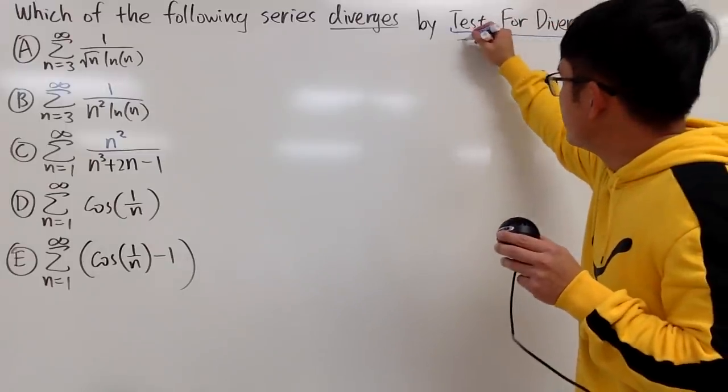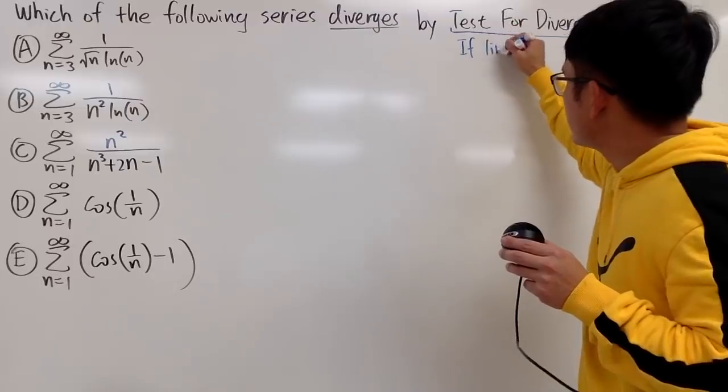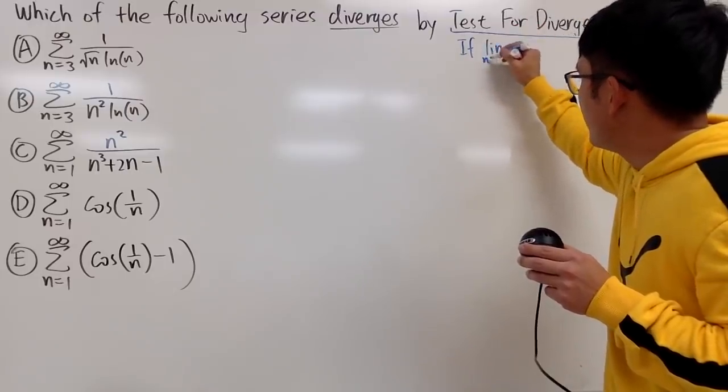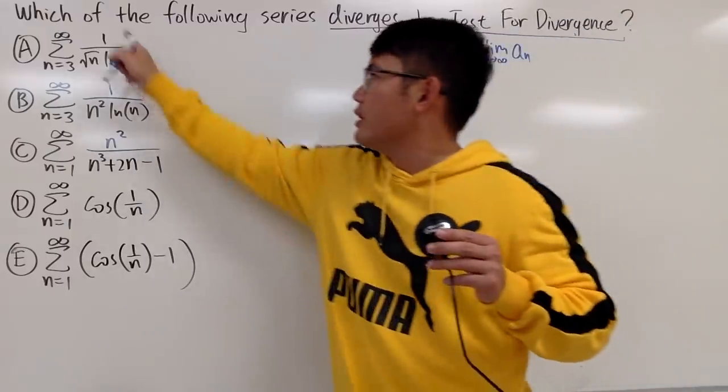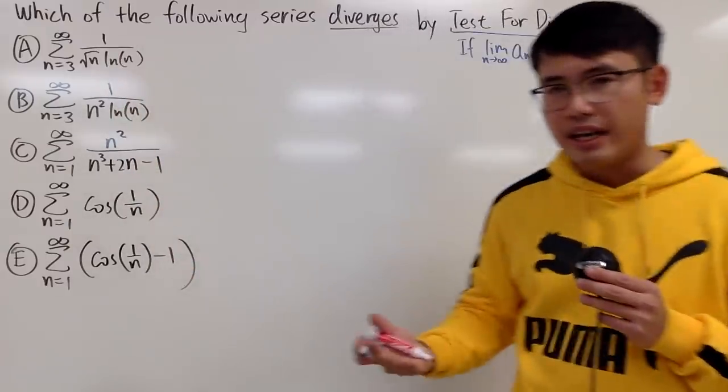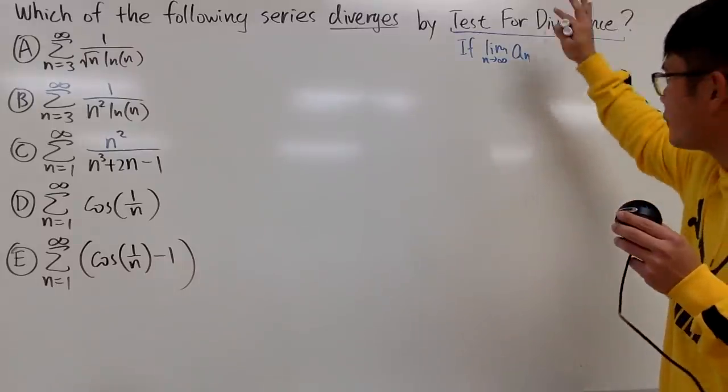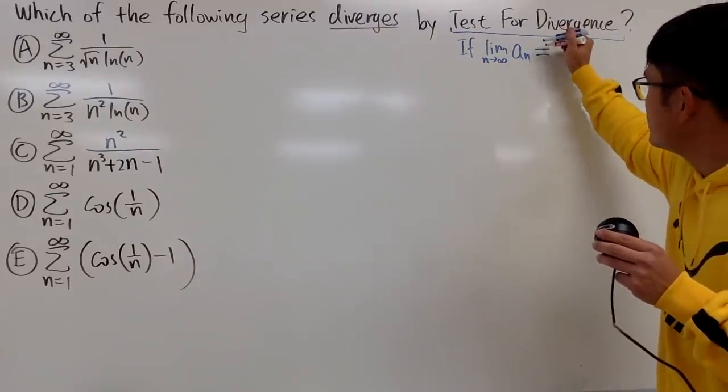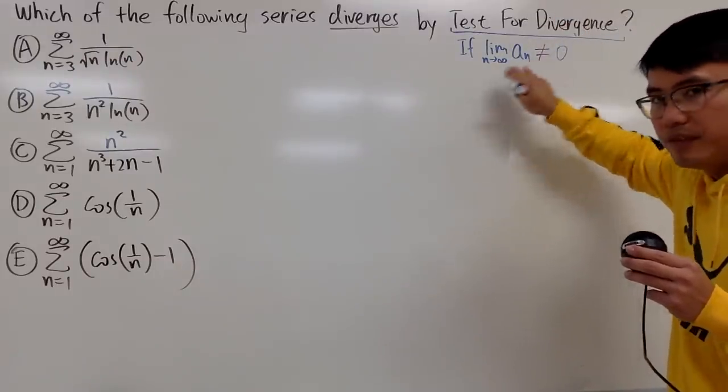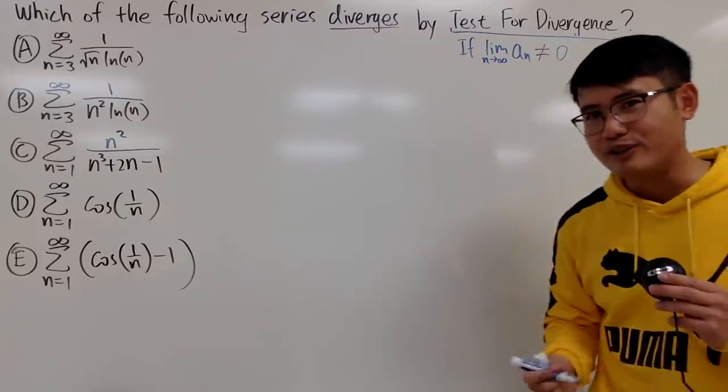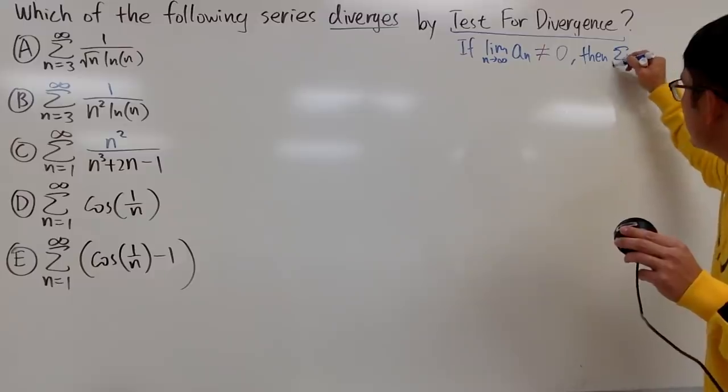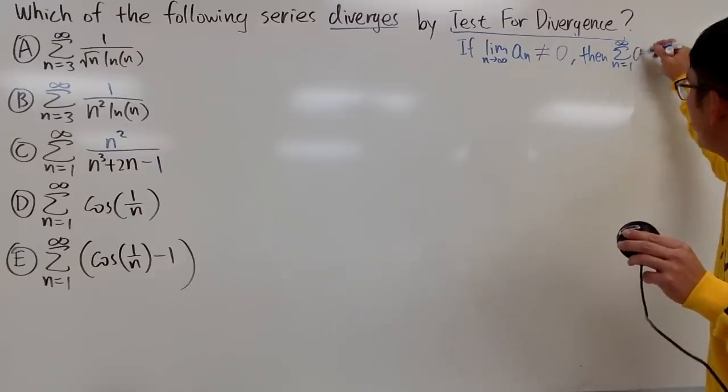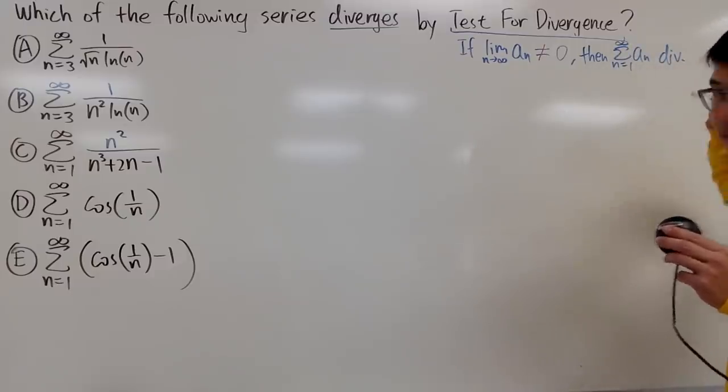All we have to do is to take the limit. If you see the limit of n goes to infinity of a_n, and remember this, this, this, and that, they are the a_n. Take the limit of that part. If you don't see 0, if this limit is not 0, then congratulations, because we get to draw conclusion that the series as n goes from 1 to infinity of a_n, this right here, diverges.